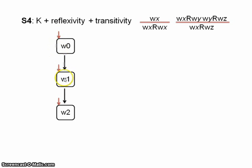But now, look, since we have W1 accessible from W0, and then we have W2 accessible from W1, well, since we have transitivity, we can derive that W2 is accessible from W0, like that.